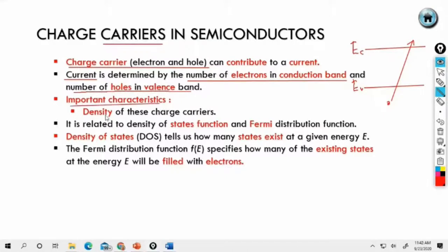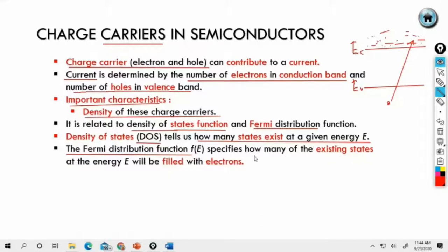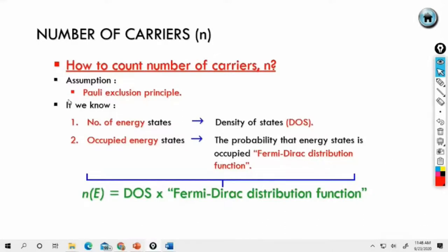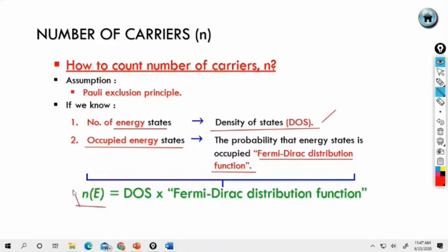An important characteristic is the density of charge carriers — how many electrons exist? It is related to the density of state function and the Fermi-Dirac distribution function. Density of states tells you how many states exist at a given energy E. The Fermi-Dirac distribution function specifies how many of those existing states at energy E will be filled with electrons. The number of carriers N equals Fermi-Dirac multiplied by DOS.